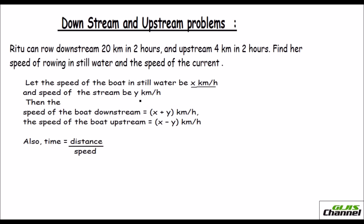The speed of the stream or current is y kilometers per hour. The speed of the boat downstream will be x plus y kilometers per hour, because the stream and the boat are both moving in the same direction, so the flow is smooth. The speed of the boat upstream is x minus y kilometers per hour, because you are rowing against the current.